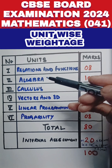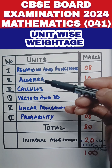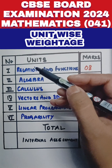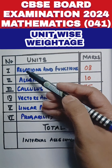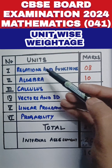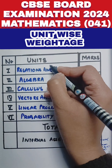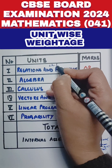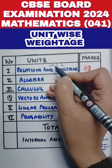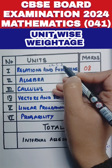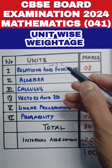Basically, the board has put unit-wise weightage. Chapter-wise, it can vary. So, unit-wise weightage is: Unit 1 is Relations and Functions, which contains two chapters — Chapter 1 and Chapter 2 — that is Relations and Functions, and Inverse Trigonometric Functions. This unit contains 8 marks.